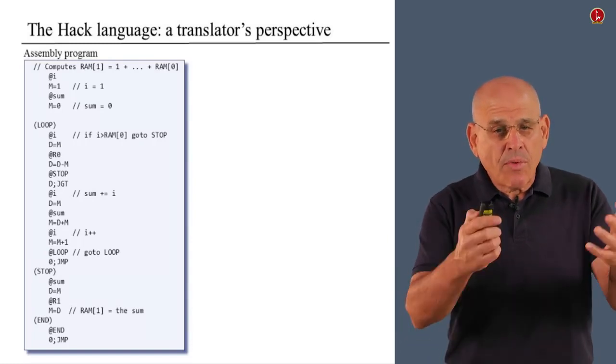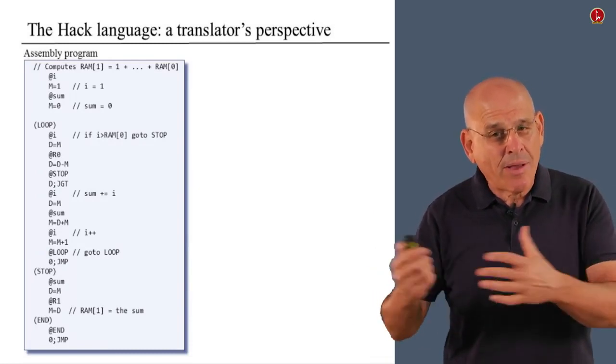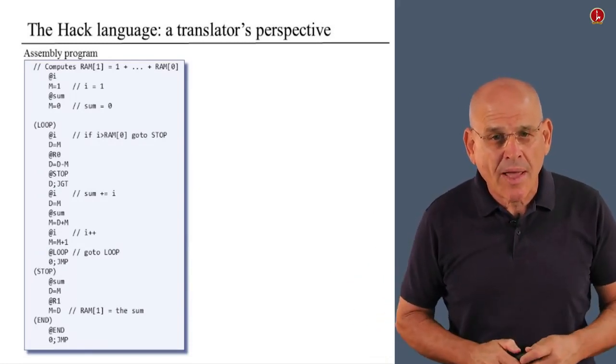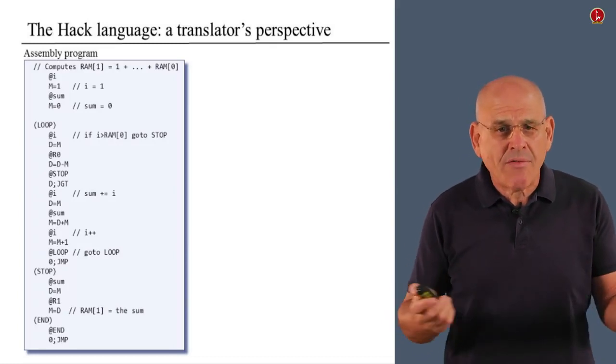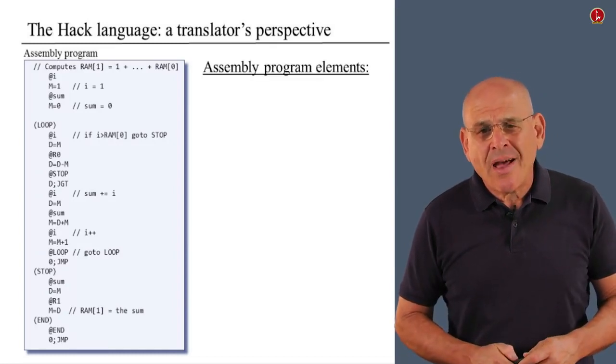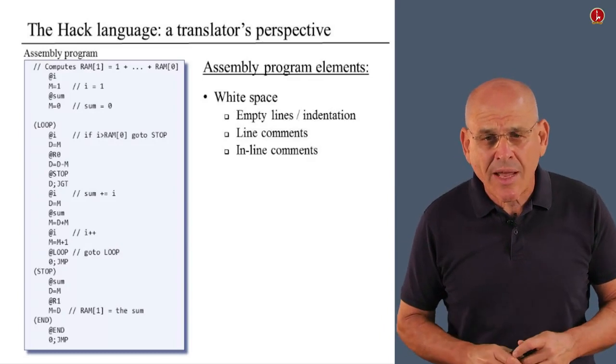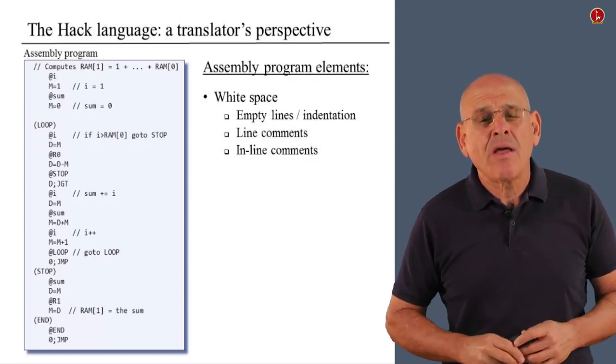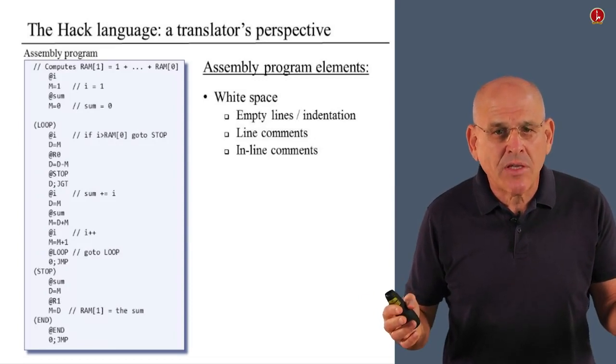Given that we have a program in which all these things come to play, what exactly do we have here in terms of general constructs? First of all, we have white space. We haven't mentioned white space in the language specification, but the white space is almost the same in every language that you can think about. You are welcome to introduce empty lines and comments.